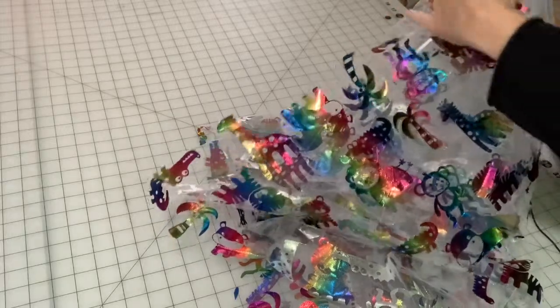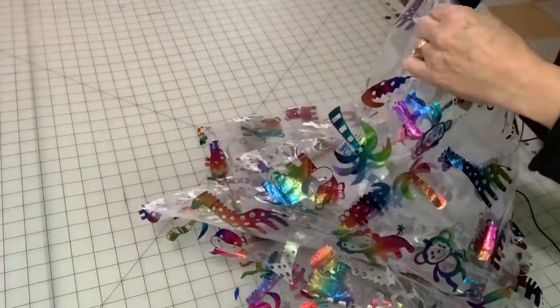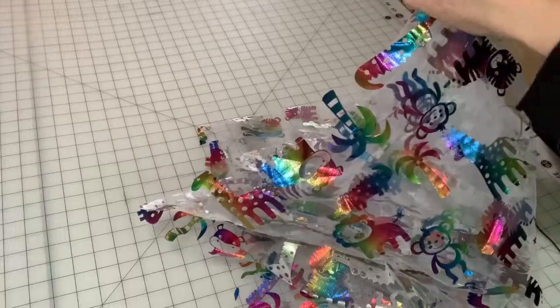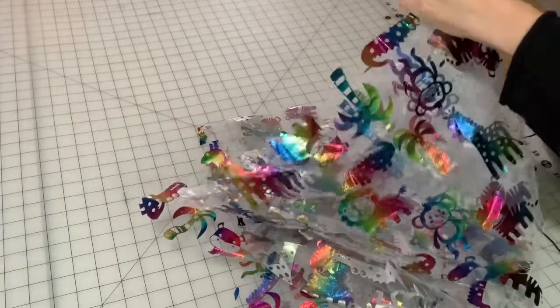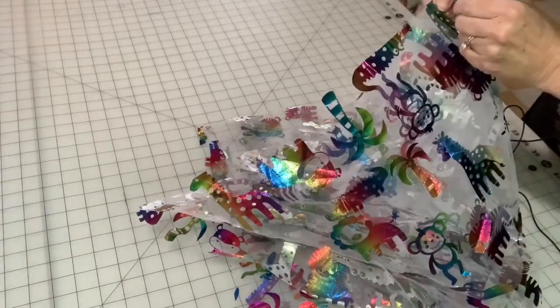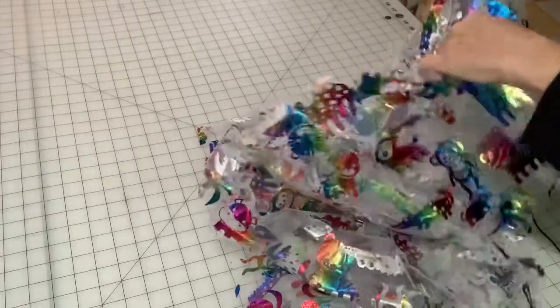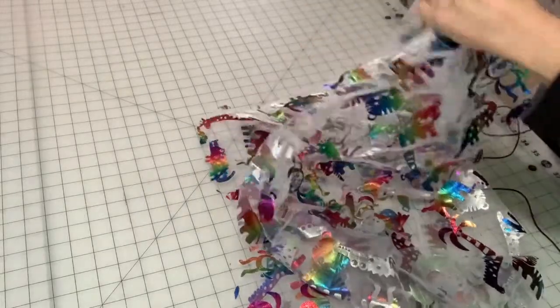This would be really cute if you had like a purple tulle and this was the top layer, or blue or green, so you could put a couple of different really fun layers underneath. And then this on the top, because you can see my animals are kind of like in shadow.